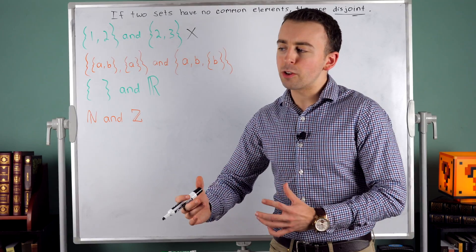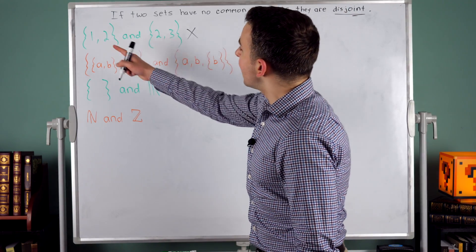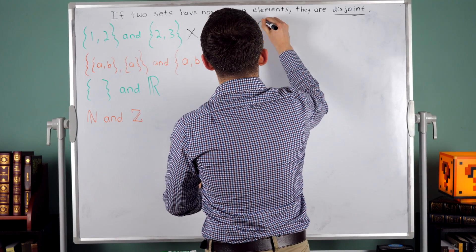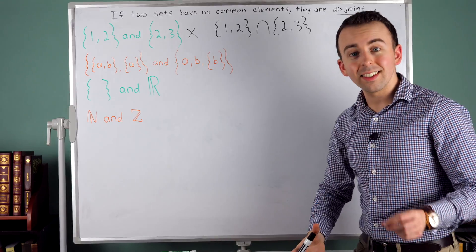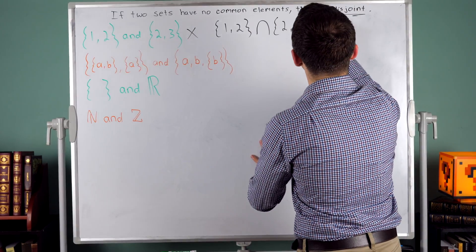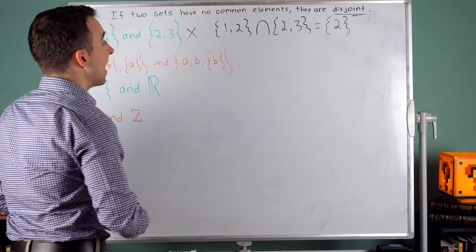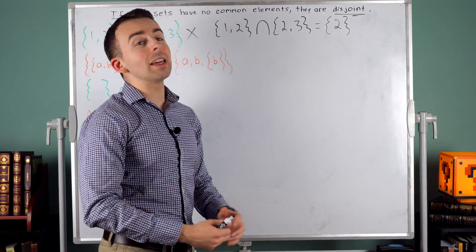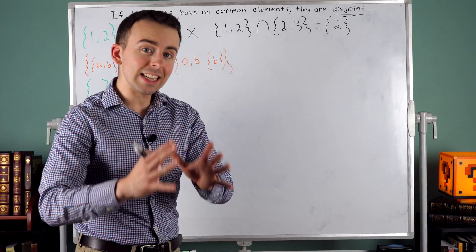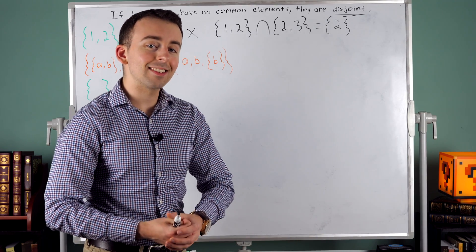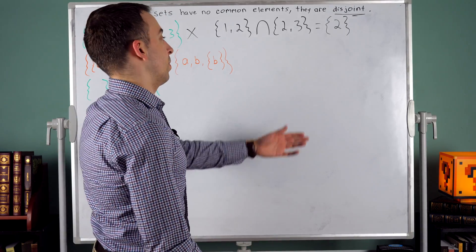Now we know a set operation that gives us the elements common to both sets. Do you remember what that's called? It's called the intersection. If we take the intersection of the set containing one and two, intersected with the set containing two and three, this gives us the elements common to both sets. Since two is the only element in both sets, their intersection is the set containing two. Since the intersection is not empty, these sets are not disjoint. Two sets are disjoint if their intersection is empty. The intersection of these sets is not empty, so they're not disjoint.